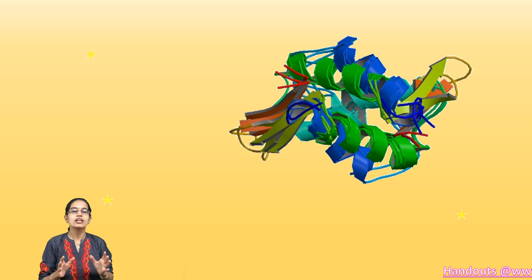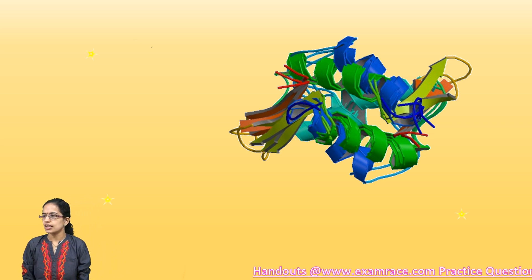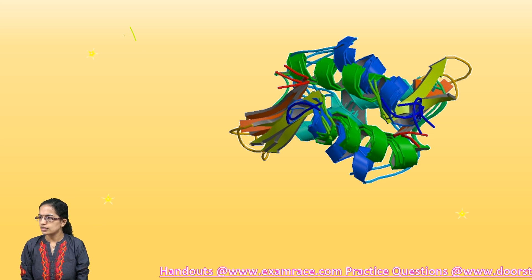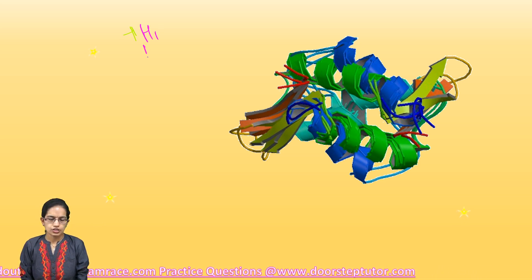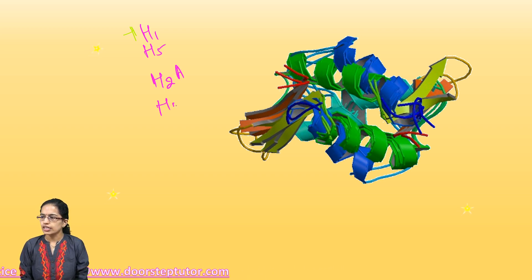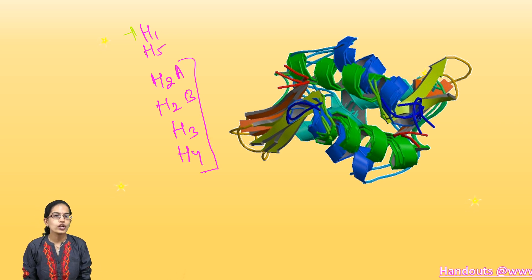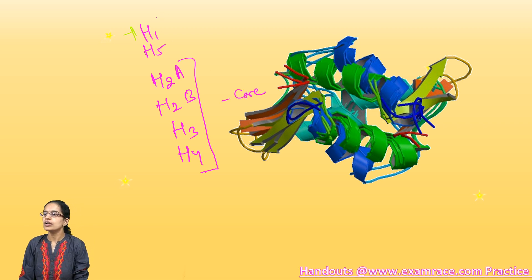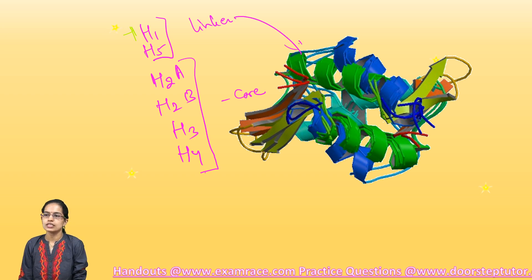These histones are present in various ways. The common histones that are seen are H1, then you would have H5, you would have H2A, H2B, H3, and H4. Now H2, H3, and H4 are known as the core histones. However, you have H1 and H5 which are known as linker histones.